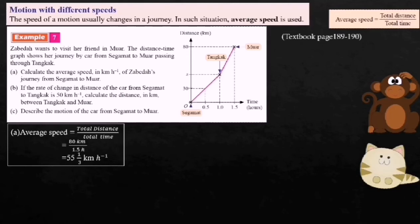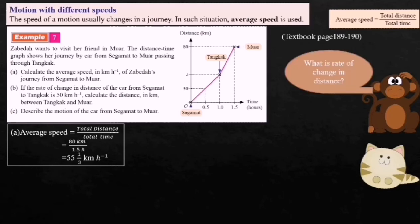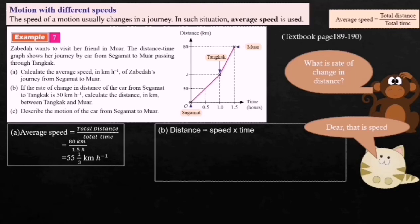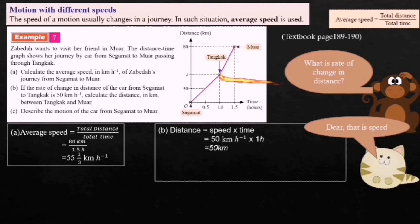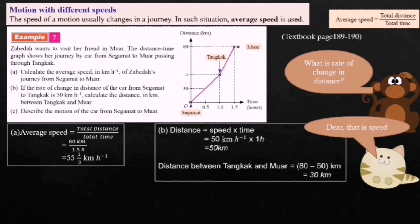If the rate of change in distance from Sekamat to Tangkat is 50 kilometers per hour, calculate the distance between Tangkat and Mua. The rate of change in distance is the speed. Distance from Sekamat to Tangkat equals 50 kilometers per hour times 1 hour, which equals 50 kilometers. So the distance between Tangkat and Mua equals 80 minus 50, which equals 30 kilometers.